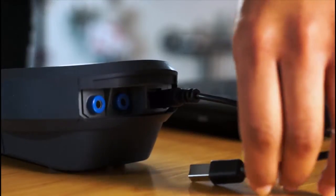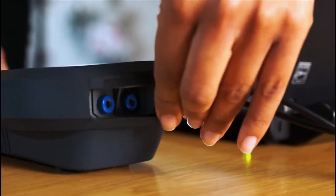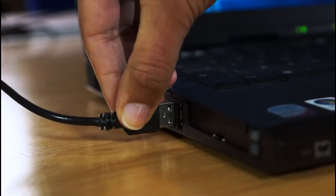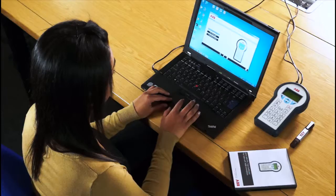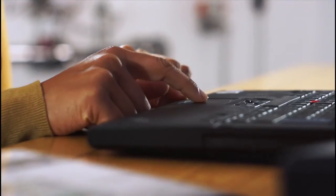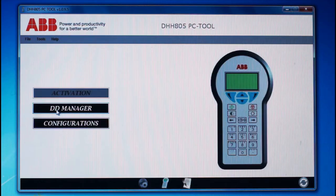Next, hook up the DHH805 to your PC via a USB connection. To activate the device, you can simply register it online through your PC software or print a registration form that can be sent via fax or email.